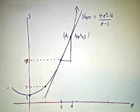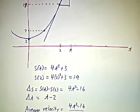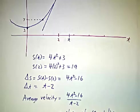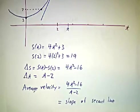Okay, so the slope of the secant line is the average velocity. But we want the instantaneous velocity. So to take the instantaneous velocity, we have to take a limit.